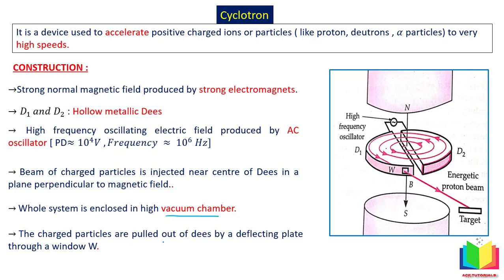The charged particles are pulled out of the D's by a deflecting plate through a window W. The charged particle starts near the center, keeps spiraling outward gaining speed, and when it reaches the maximum desired speed at the edge, it is extracted through the window. The deflecting plate, which is generally at a negative potential, attracts the positive particle and directs it straight toward the target.